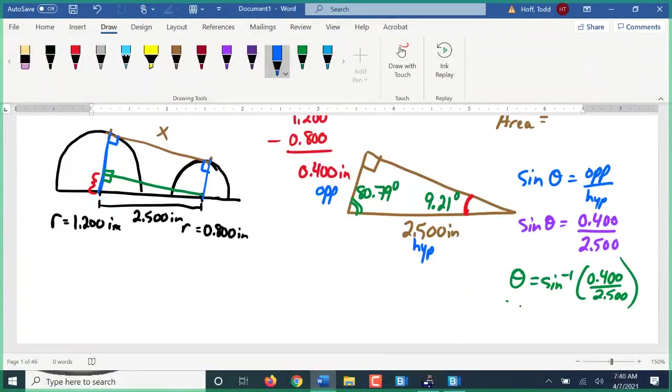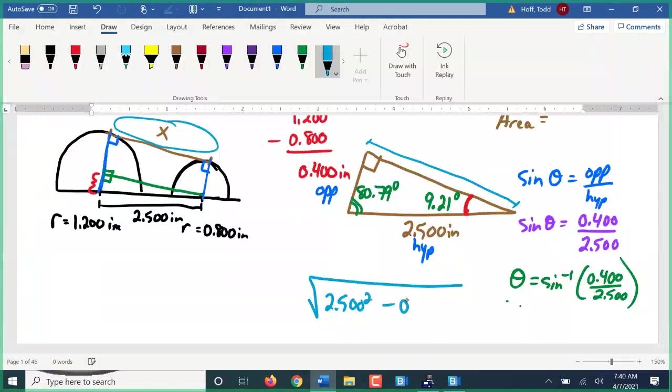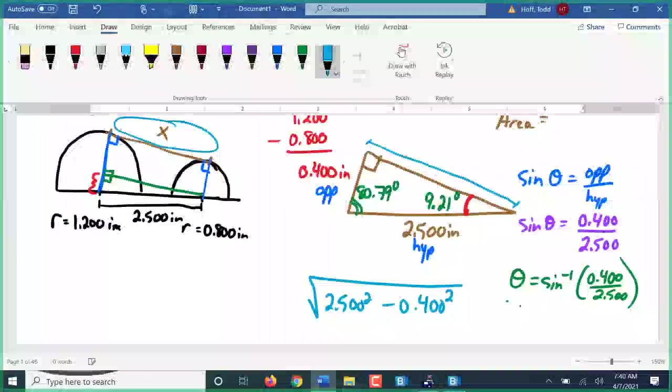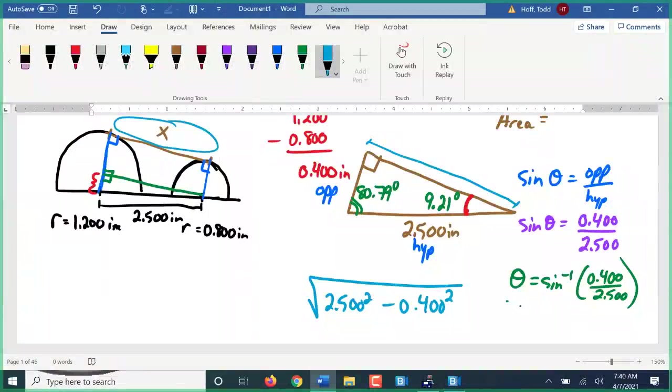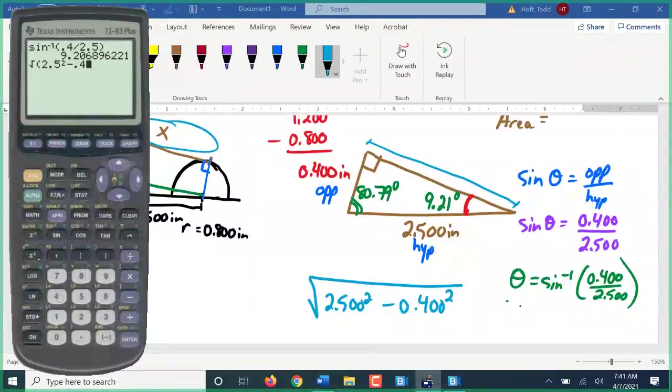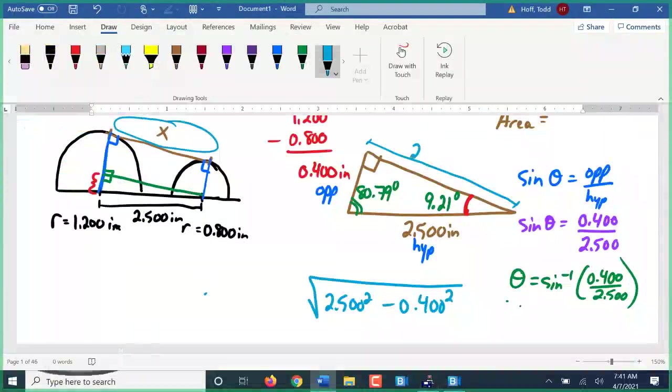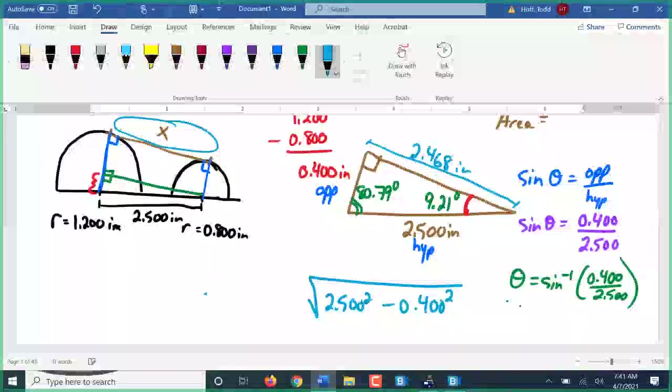How do I find x? Perfect. Just a squared plus b squared equals c squared. We're working in reverse. c squared minus a squared. 2.5 squared minus 0.4 squared. We get 2.468. That's x.